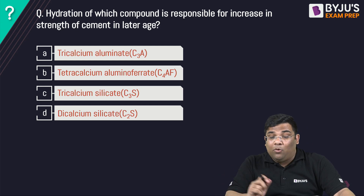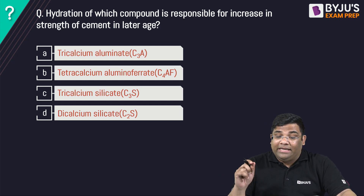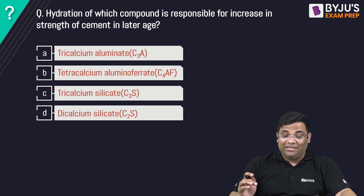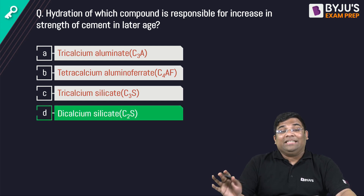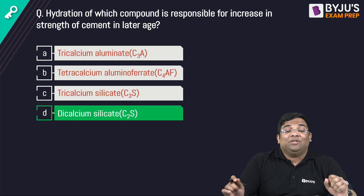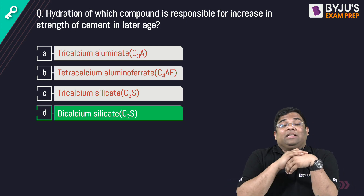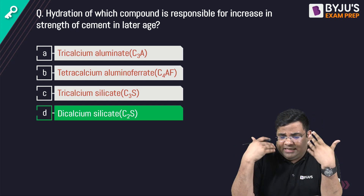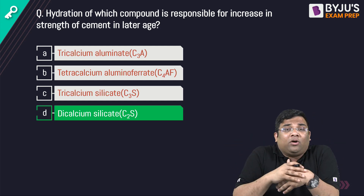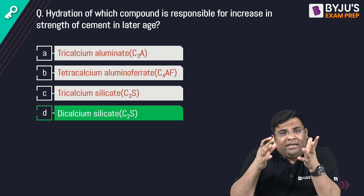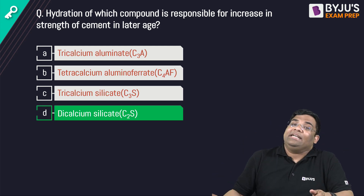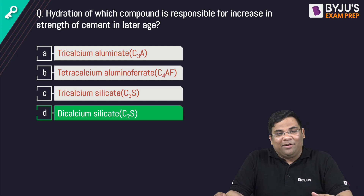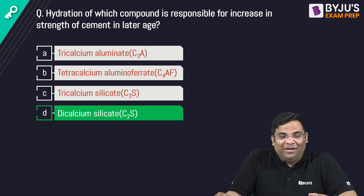Last question: Hydration of which compound is responsible for increase in strength in the later stage? The answer is C2S, which is responsible for strength after 28 days. This concludes the discussion of Bogue compounds — we discussed their formulas, names, percentages, properties, and solved objective questions relevant to the GATE examination. Thank you and see you in the next video.